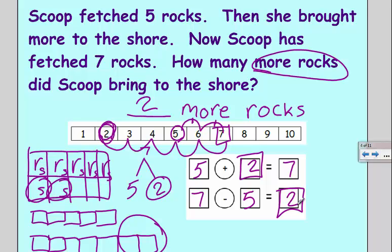So the missing addend is the answer to a subtraction problem. It's the difference between two lengths.